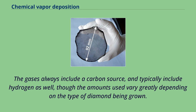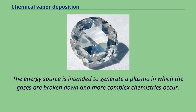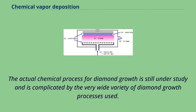Energy sources include hot filament, microwave power, and arc discharges, among others. The energy source is intended to generate a plasma in which the gases are broken down and more complex chemistries occur. The actual chemical process for diamond growth is still under study and is complicated by the very wide variety of diamond growth processes used. Using CVD, films of diamond can be grown over large areas of substrate with control over the properties of the diamond produced.